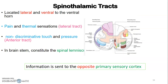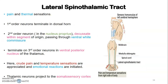We now discuss the spinothalamic tract. The lateral spinothalamic tract carries pain and temperature sensation, while the anterior spinothalamic carries non-discriminatory touch and pressure. In the brainstem, the anterior and lateral spinothalamic tracts together form the spinal lemniscus, and information is sent to the opposite somatosensory cortex — there is decussation in this tract as well. Both tracts again involve three neurons.